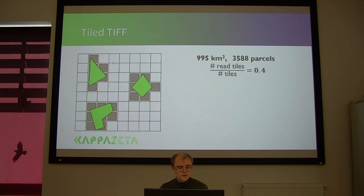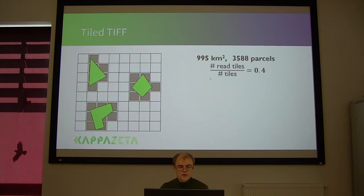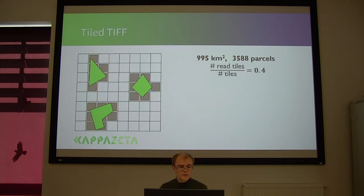If we manage to organize things so that about half of the image doesn't need to be read in, we save a lot of time. For example, in a test I carried out on a 1,000 square kilometer area containing about 3,600 parcels, the ratio between the number of tiles I read in over the total number of tiles in the whole image was 0.4. So more than half of the pixels I never read in. This is almost impossible to achieve if the data is ordered line-wise — in that case, most probably you have to read the whole image several times into memory.